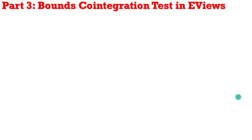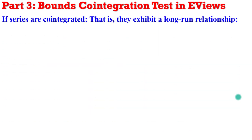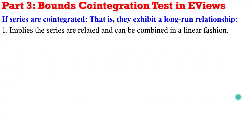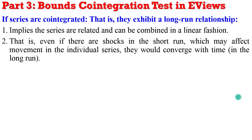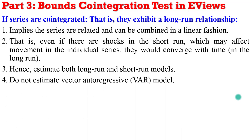So I conclude by saying that if series are cointegrated, it implies that there exists a long run relationship. If that is the case, such series can be combined in a linear fashion, because if there are shocks in the short run which may affect movements in the individual series, in the long run there will be convergence. In that situation, you estimate both the long run and short run models, that is the ARDL and the VECM models. You cannot estimate VAR in this situation, because you are having a combination of variables with I(0) and I(1) integration.